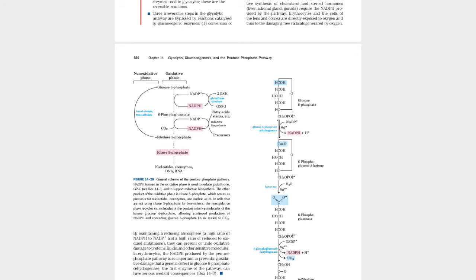The two significances of the pentose phosphate pathway are: number one, to generate pentose sugars which can be used for the synthesis of nucleotides, nucleic acids, and coenzymes; and number two, to generate the reducing agent NADPH, which is used in other reductive pathways. This concludes unit 4 and the pentose phosphate pathway. Thank you very much.